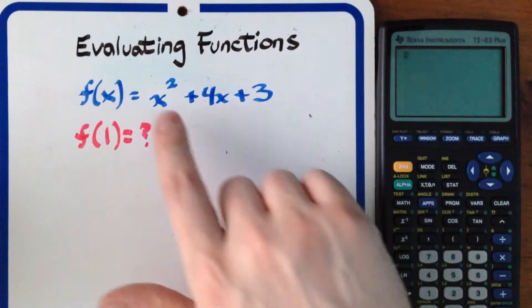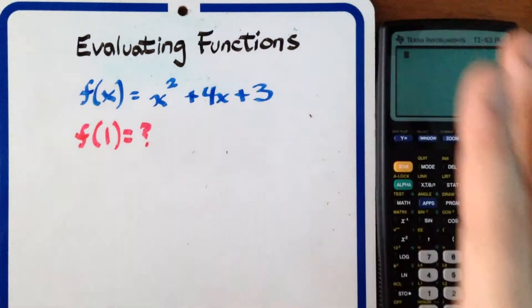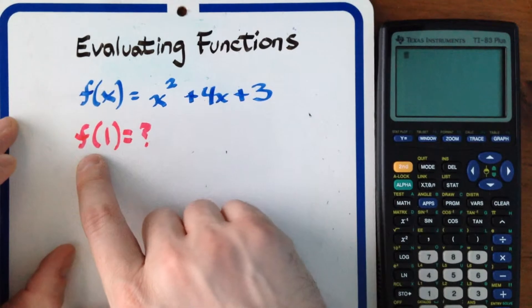So we have this function right here f(x) equals x squared plus 4x plus 3. So what we want to do in this case is find what's f(1)?